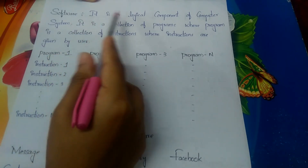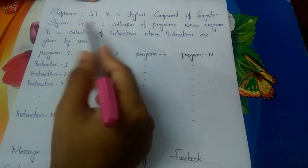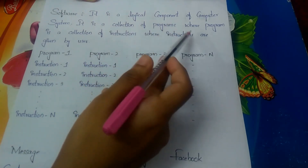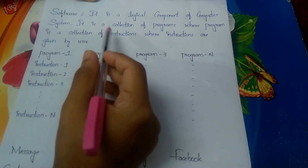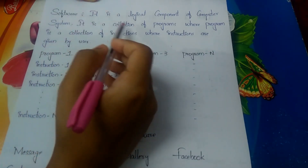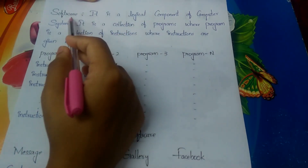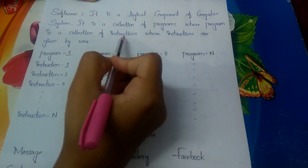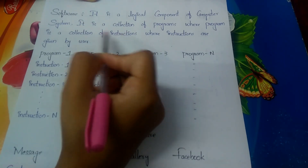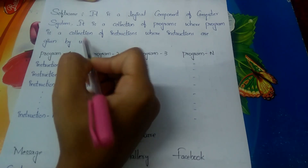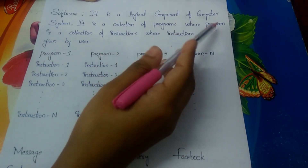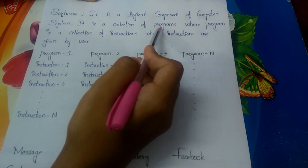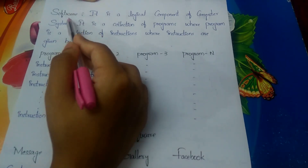Software is a logical component of a computer system. It is a collection of programs, where a program is a collection of instructions, and those instructions are given by the user to the computer. The collection of programs constitutes software, and the collection of software instructions will also constitute the operating system.